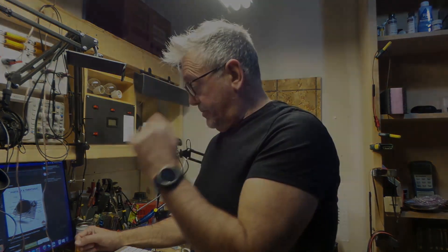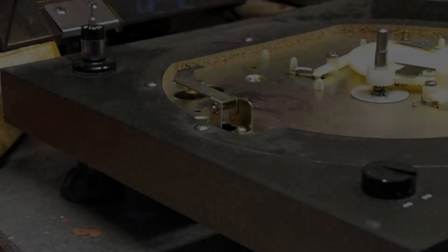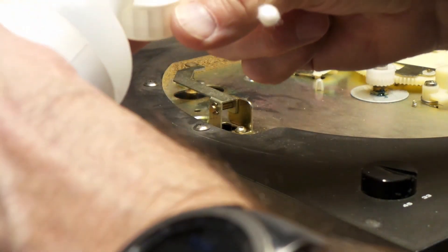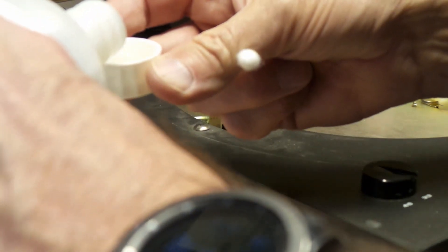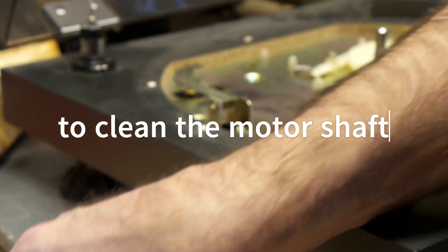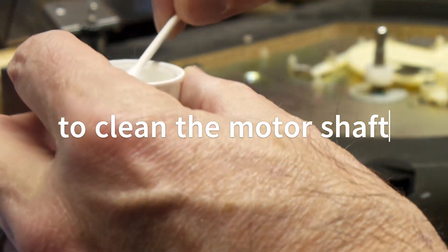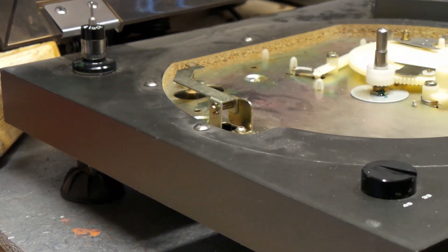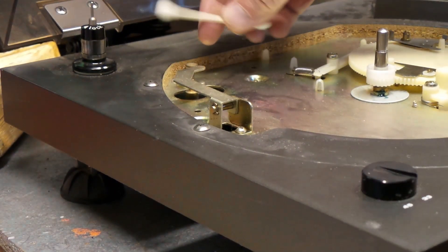Now that the tonearm has been set properly, I'm going to do the service part of this. So we're going to do that right now. Let's do it. I'm going to use some alcohol. Just a little bit. Dip my Q-tip in it. There. The motor is running.